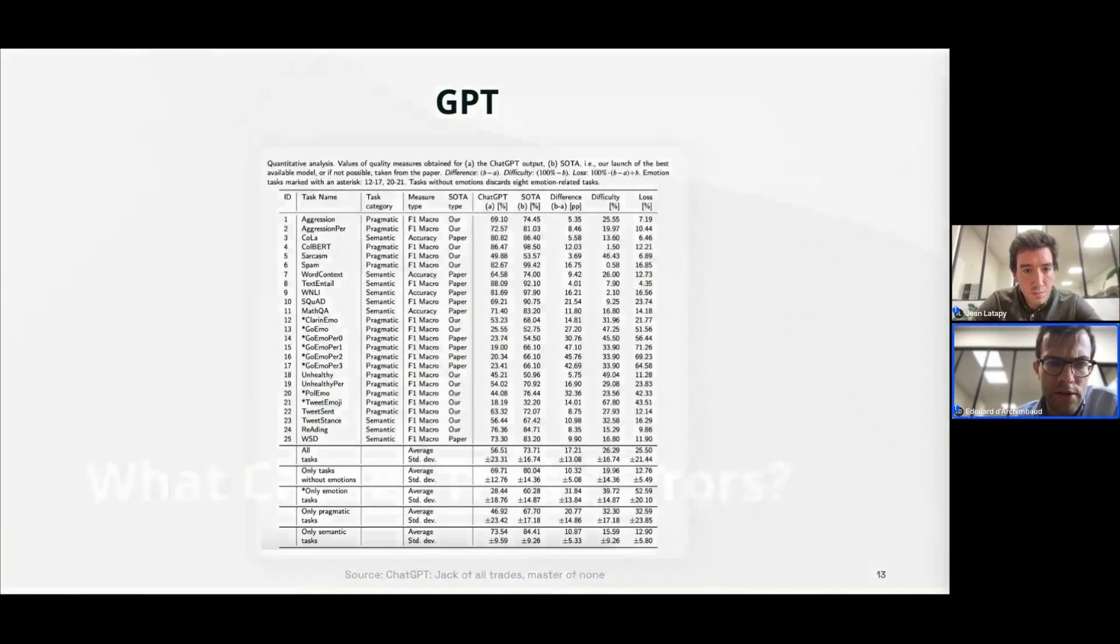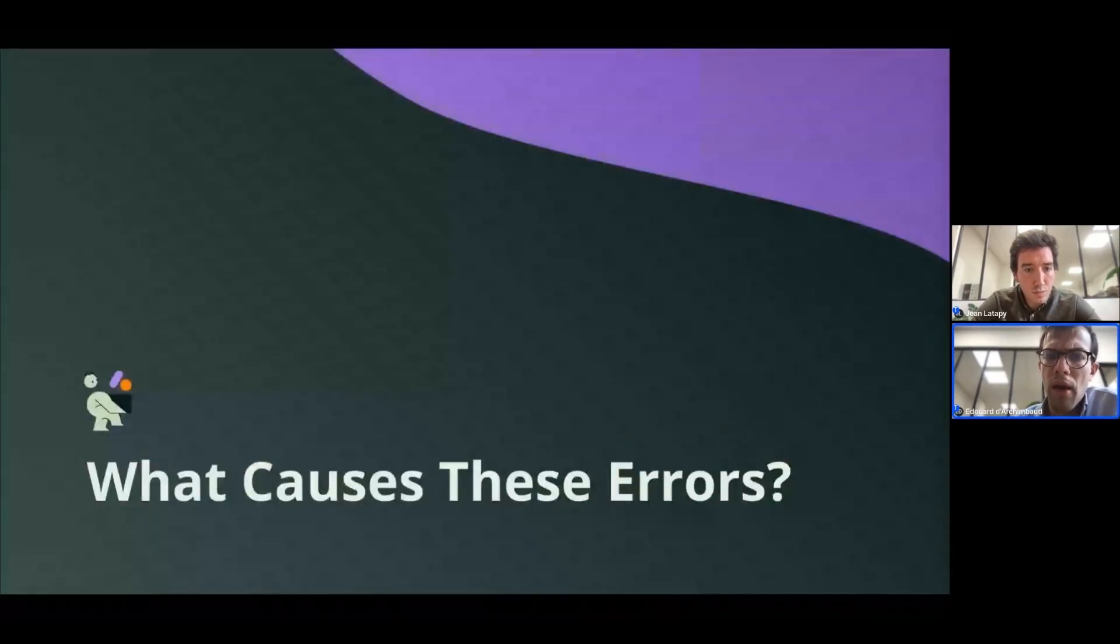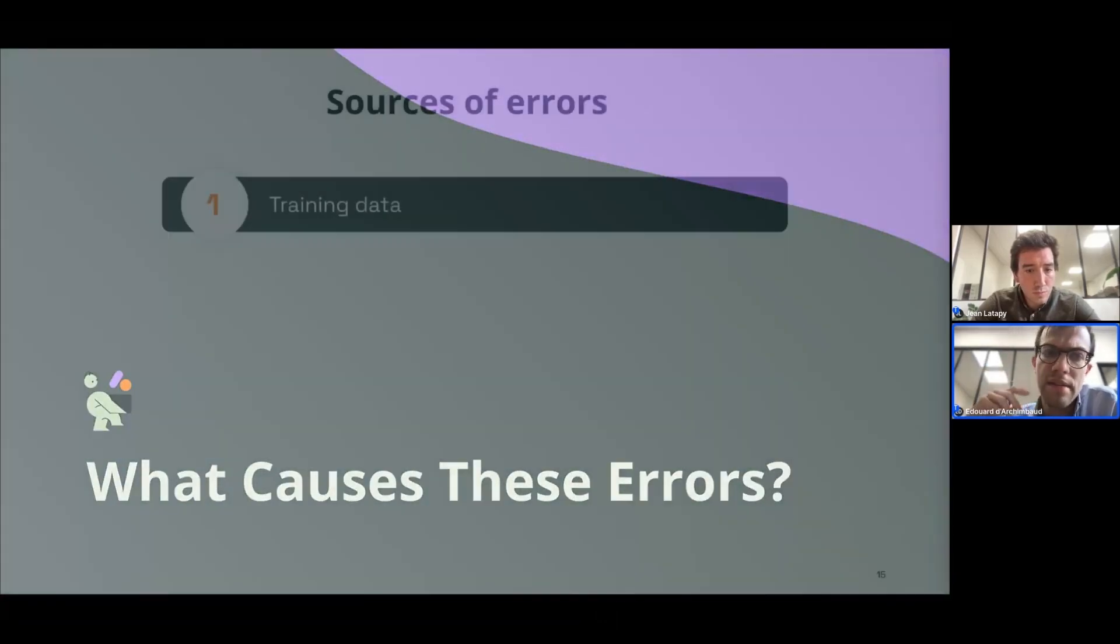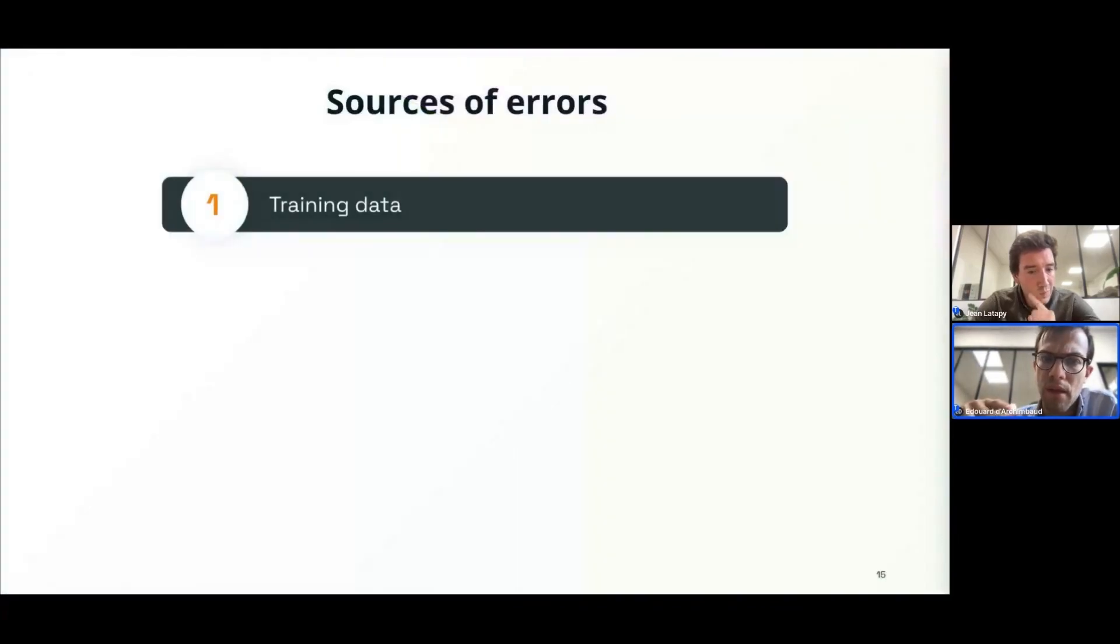So what causes those errors? The errors and limitations of large language models can be attributed to several factors. The first one is the training data. Data can be biased, sparse, incomplete, lack relevancy, and contain inaccuracies.